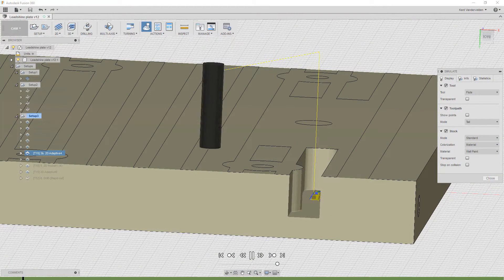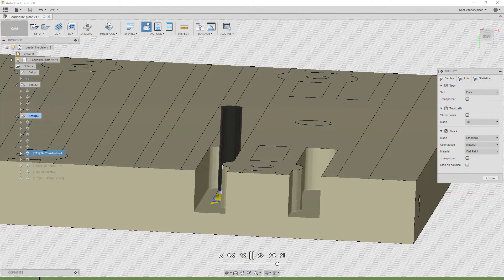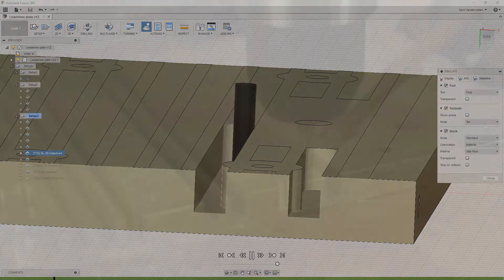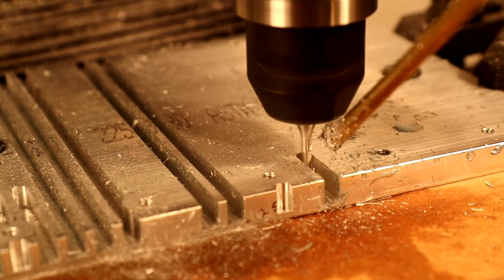Given how well the 2D adaptive clearing strategy worked, the length of cut was increased to the full slot depth. The change worked great and the machining rate doubled. No tools were broken.